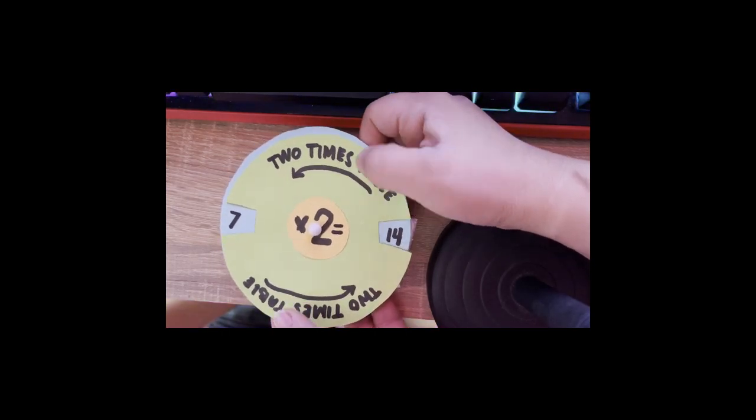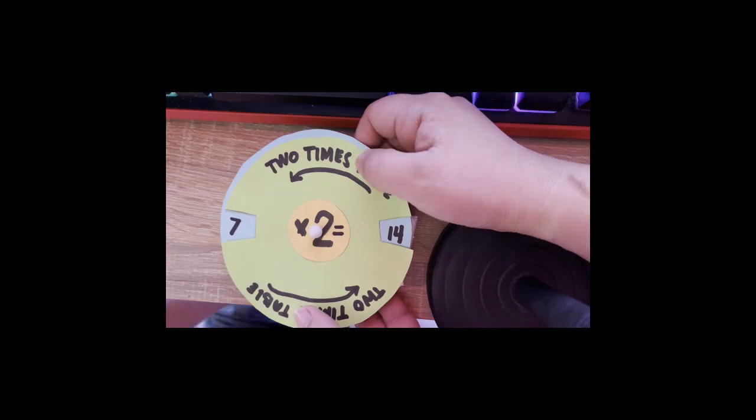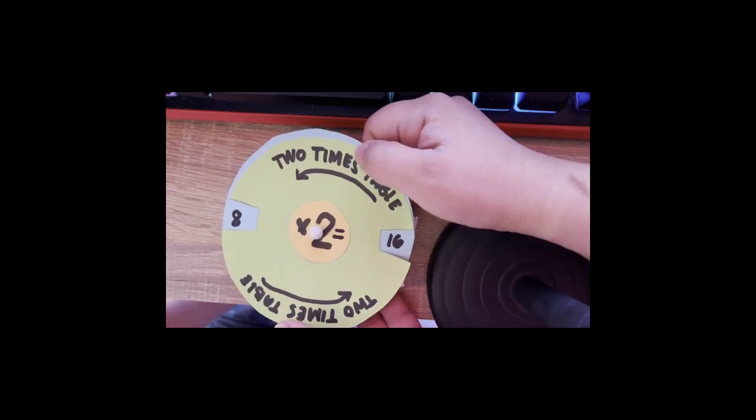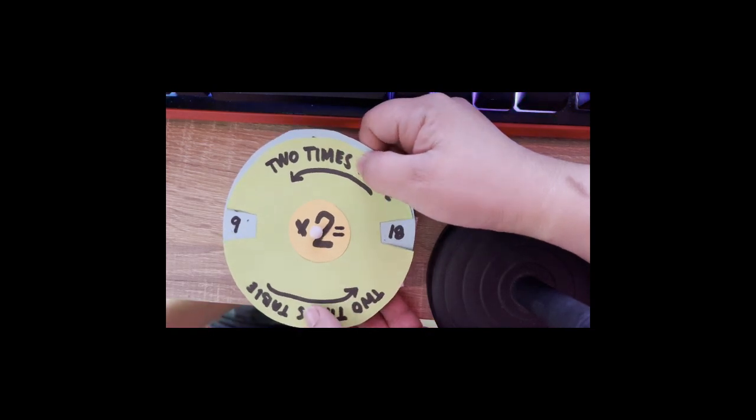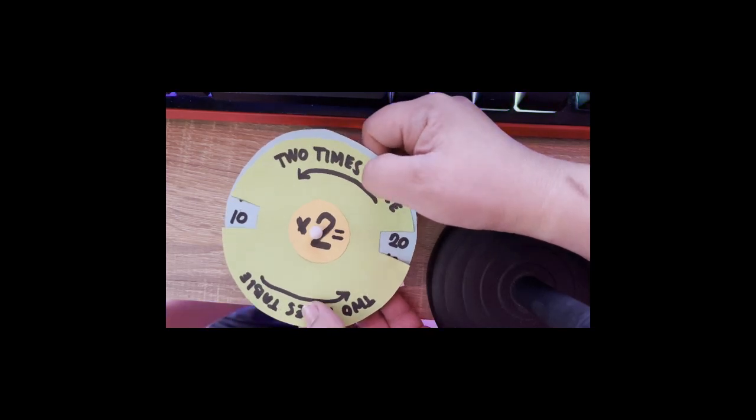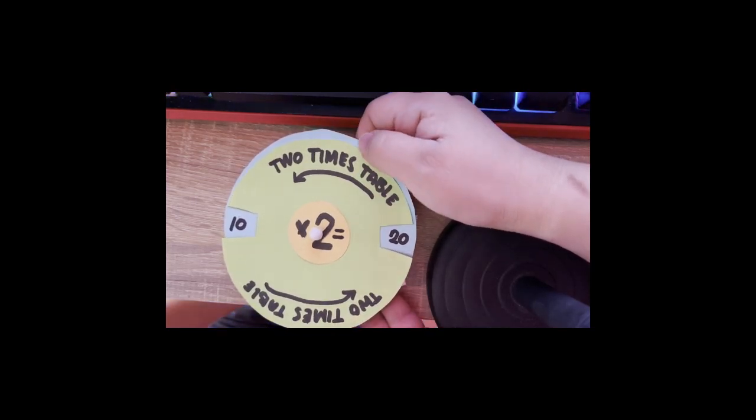7 times 2 is equal to 14. 8 times 2 is equal to 16. 9 times 2 is equal to 18. 10 times 2 is equal to 20.